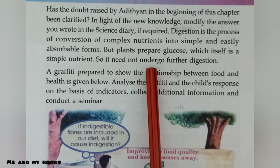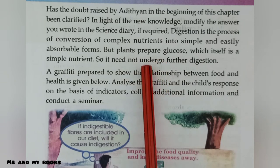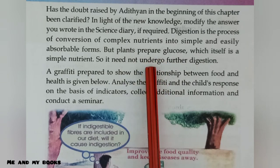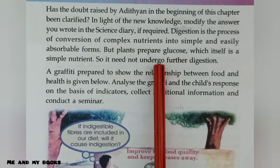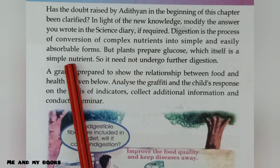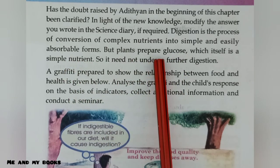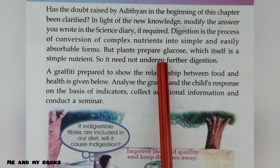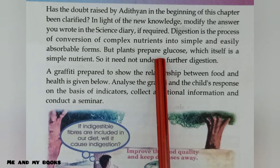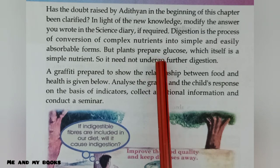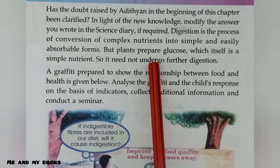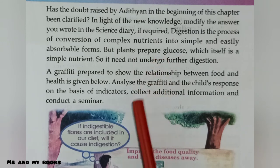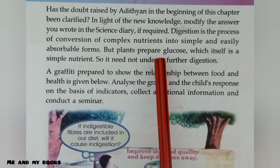Digestion is the process of conversion of complex nutrients into simple and easily absorbable forms. But plants prepare glucose, which itself is a simple nutrient, so it need not undergo further digestion. Because plants already produce simple glucose, they do not have a digestive system.